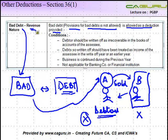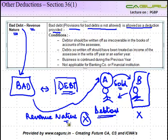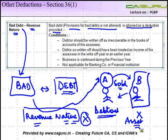By revenue nature, I mean that this was towards the sale of goods, so the income which A got out of this was of a revenue nature. It is not of a capital nature. For example, if A had some asset which he sold to B, and there was no profit made on this and then B refused to pay him — for A, because he's selling an asset, it's a capital transaction. That is not what we are considering here; we are considering what is of a revenue nature.